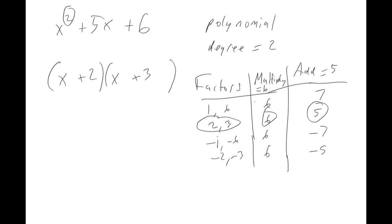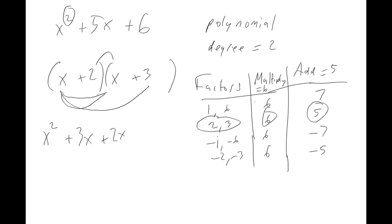Just to make sure you understand why they need to add up to equal five, let's go back and practice FOILing. x times x is x squared. Then x times three is 3x — the outside. Two times x is 2x — the inside. Two times three is six — the last. When you multiply together, you get the product of those two numbers at the end, so that's why they have to multiply to equal six.